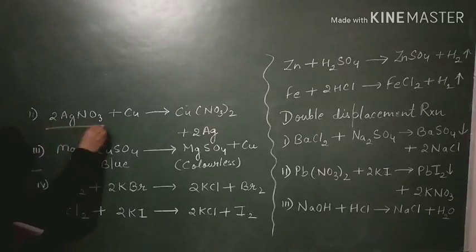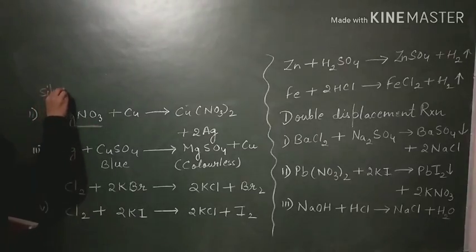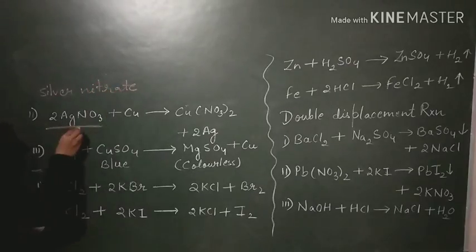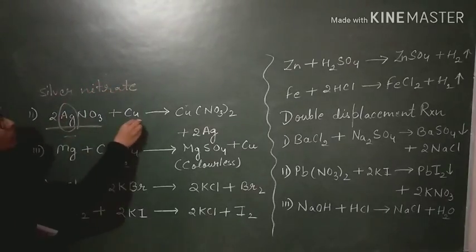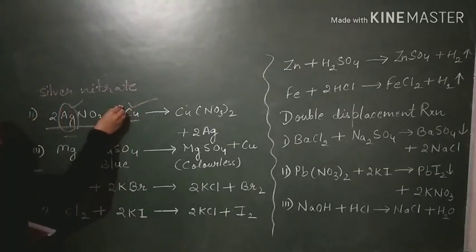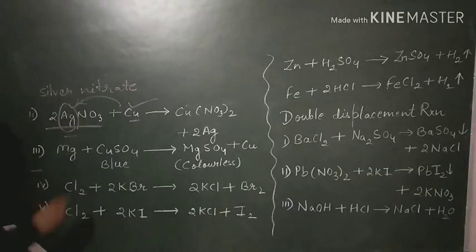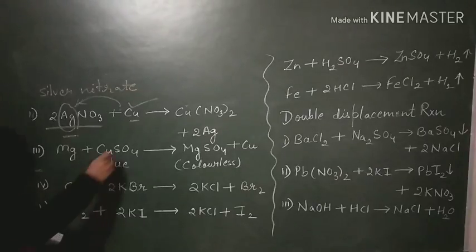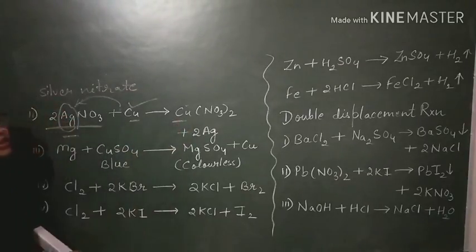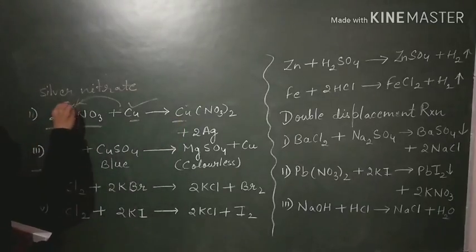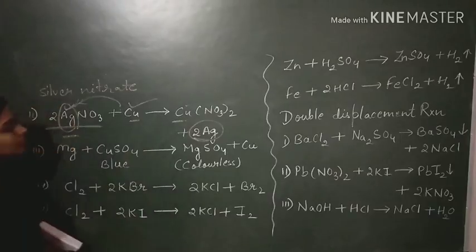Next, we are taking the example of silver nitrate. Silver is less reactive than copper. Copper is more reactive, so the more reactive metal will displace the less reactive one from its compound. Copper will displace silver, forming copper nitrate, and silver will be left alone.